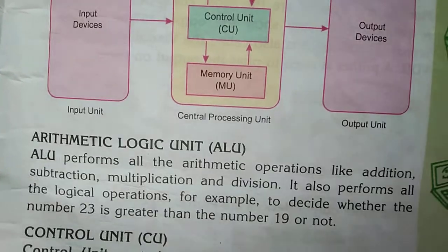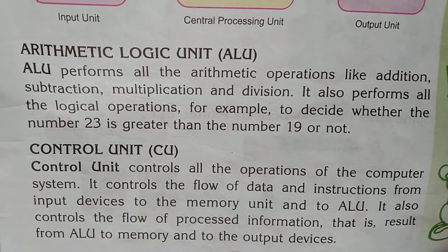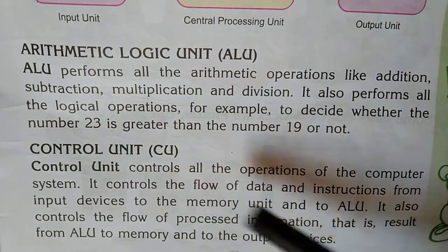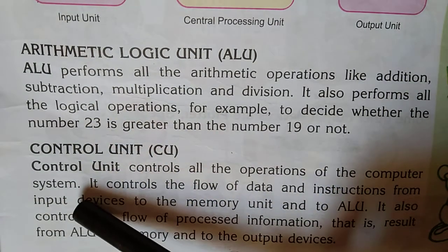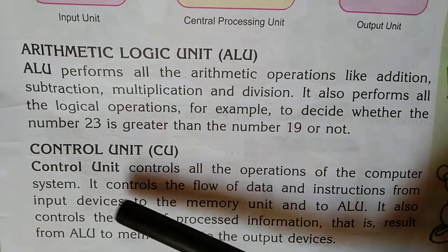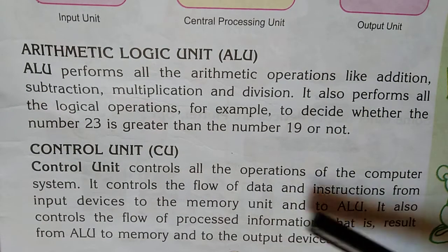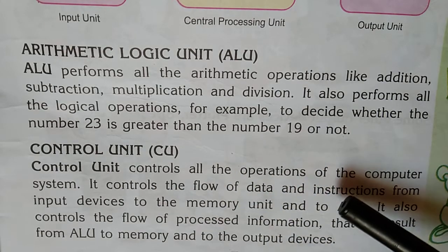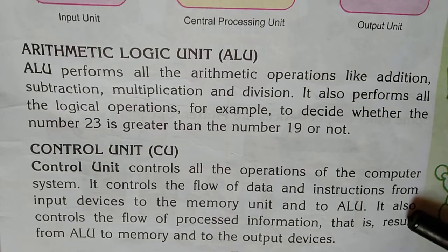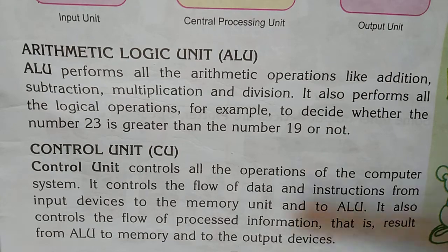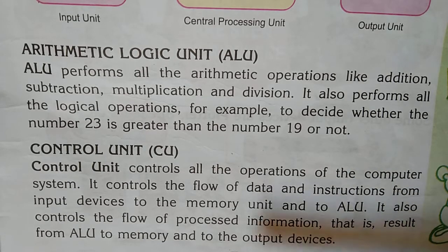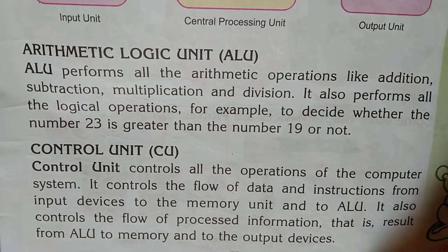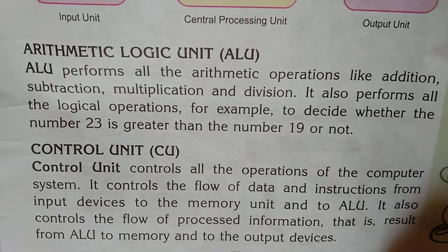The second part of the CPU is the Control Unit. Control unit controls all the operations of the computer system; it does not perform operations, it controls them — like a supervisor. It controls the flow of data and instructions from the input device to the memory unit and to ALU. It also controls the flow of processed information — the result — from ALU to memory and to the output devices. Basically, the work of the control unit is data traffic control, like a traffic police officer.